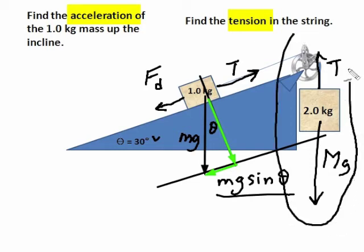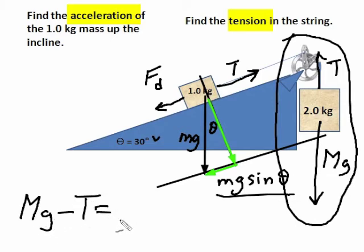And to find the tension, we can pick any one of those masses and find the F equals MA equation for that mass. This is probably the easiest because it's a very simple equation and something simple to solve. The F equals MA equation is big Mg minus T equals big M times A. And we know what all of these are. We have one unknown, which is the tension. The big mass is 2 times 9.8 minus our unknown, which is the tension.